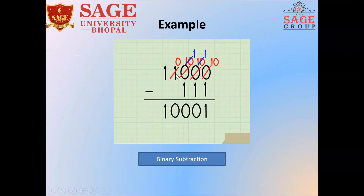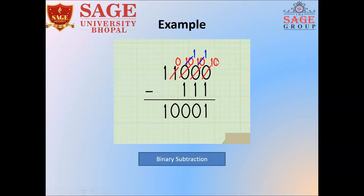Here we have another example: one set of digits is 11000 and another set of digits is 111. We start from the right. Looking at the top number, we have the smallest digit 0 and below we have 1. When we go to the neighbor, it also has the smallest digit, so it cannot give a borrow. We move further to the next neighbor, which gives its borrow — that position becomes 0, and the one that received it becomes 10.